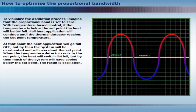When the temperature detector cools to the set point, the heat will switch on full. But by then, much of the system will have cooled below the set point. The result is oscillation.